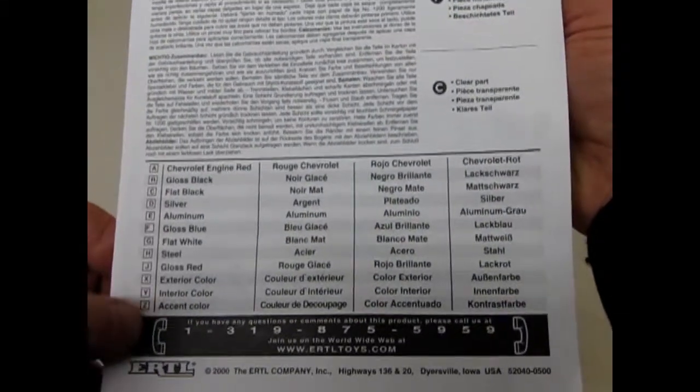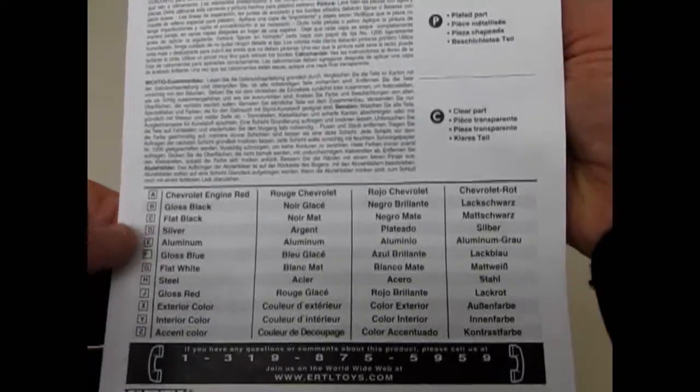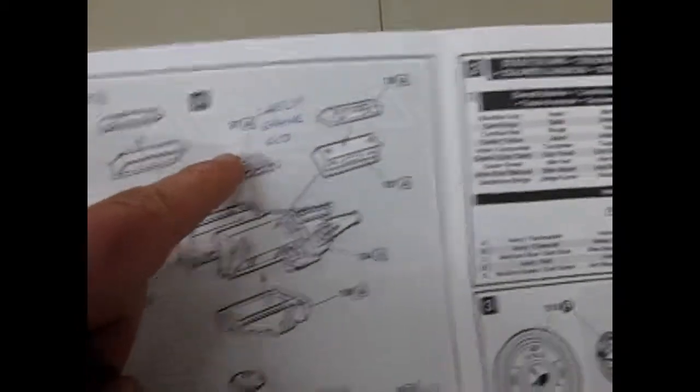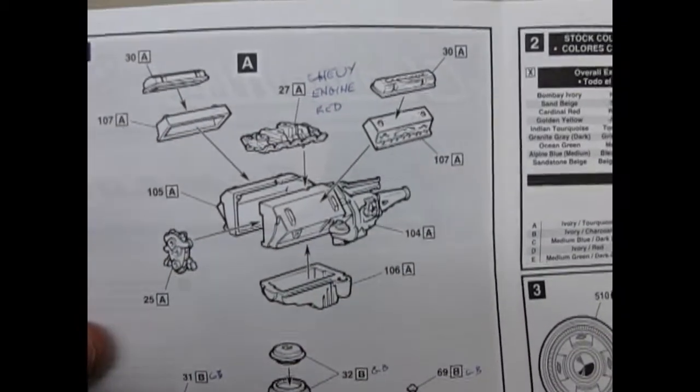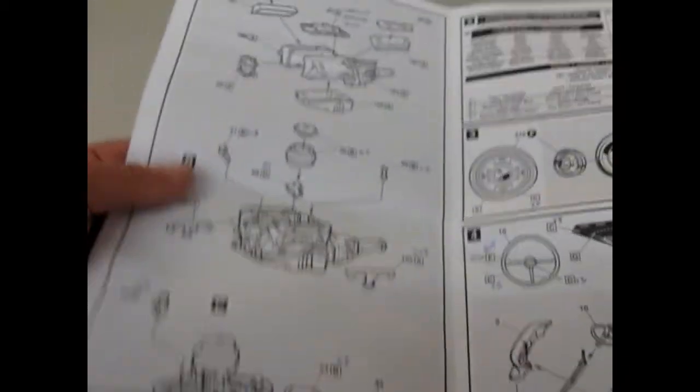They give you a list of all the colors that the car would come in. Chevrolet engine red, gloss black, and they're all lettered. Those refer to things like this. The part A on your engine block is going to become Chevy engine red, etc. Gloss black, and so on.